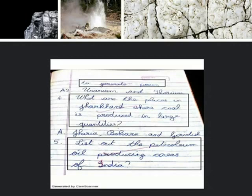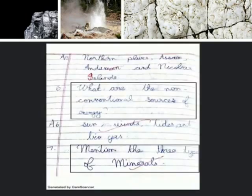Question 5. List out the petroleum oil producing areas of India: Boston Plains, Assam, Andaman and Nicobar Islands.